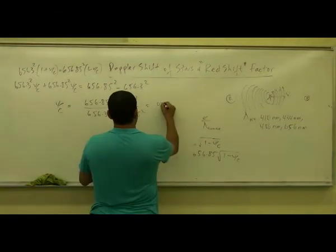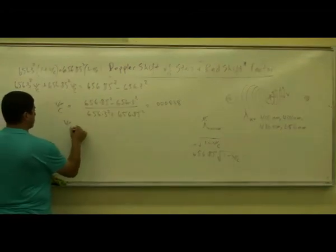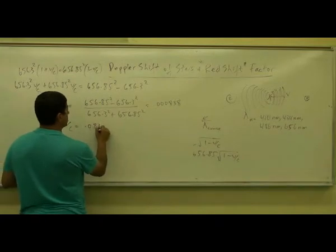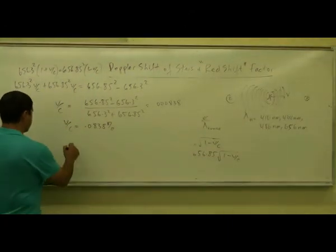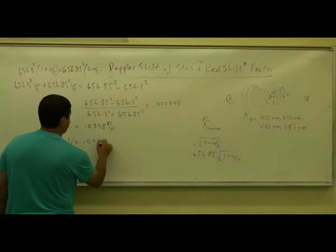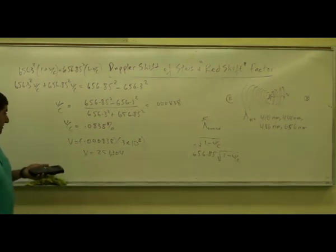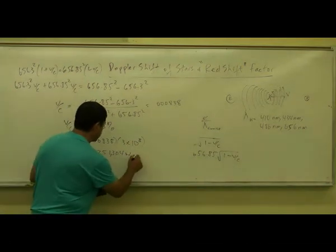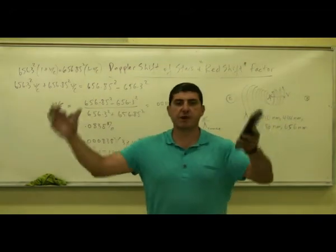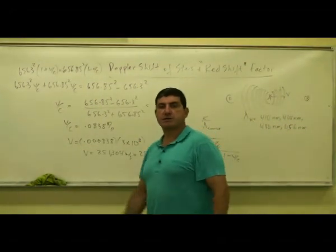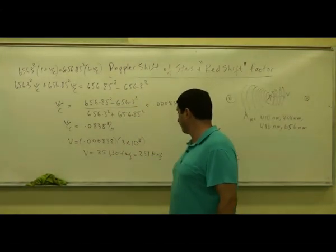That gives us approximately 0.000838, meaning the velocity is 0.0838 percent of the speed of light. Multiplying by the speed of light (3 times 10^8 m/s), we get 251,304 meters per second, which is 251 kilometers per second. That's typical for objects moving away from each other on a universe scale — galaxies and stars move away or toward each other at velocities around that magnitude.